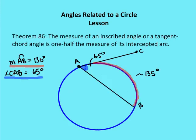Let's talk about the characteristics of those angles. For either an inscribed angle or a tangent-chord angle, that angle itself is going to be equal to one half the measure of its intercepted arc. The intercepted arc here is AB — from A all the way to B. The measure of angle CAB is going to be half of that value, or 65 degrees.